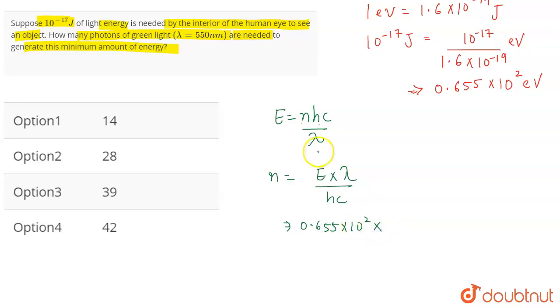Lambda is equal to 515 nanometers. We will convert it into meters by multiplying it by 10 to the power minus 9, because 1 nanometer is equal to 10 to the power minus 9 meters.